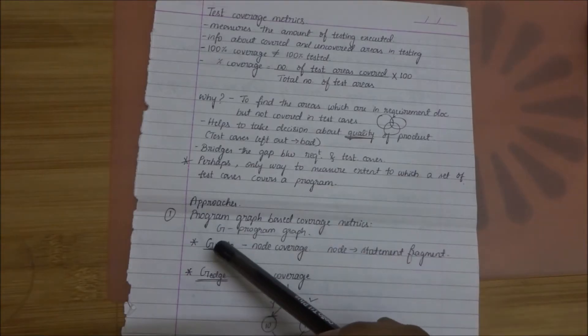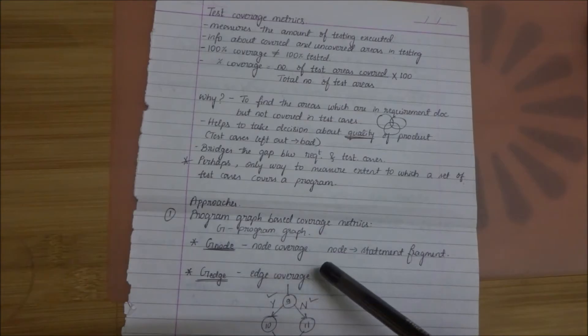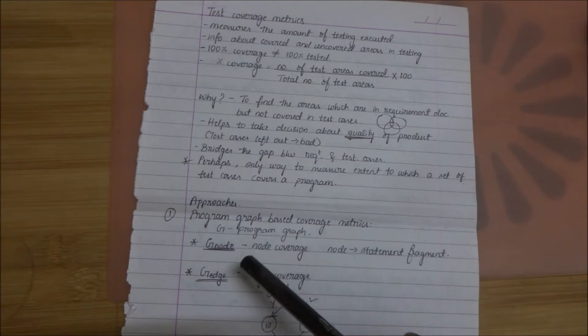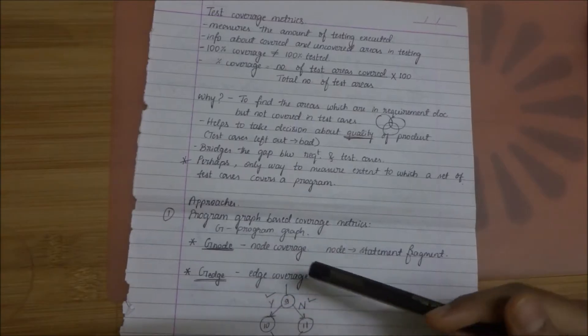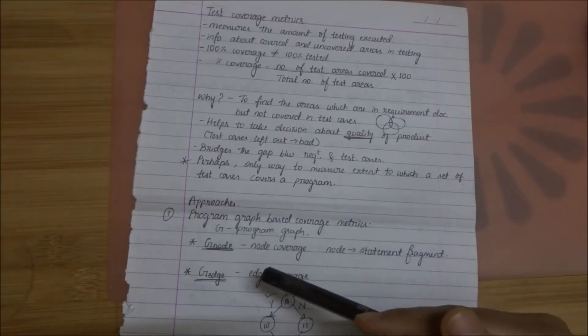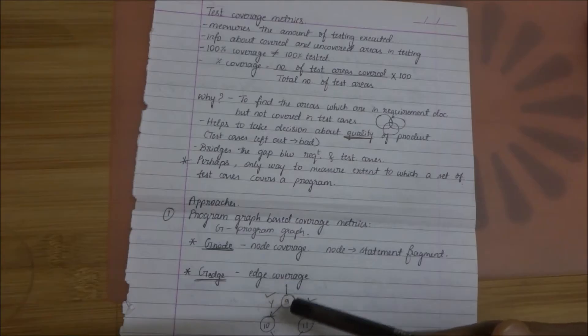There are a lot of approaches in test coverage matrix. I'll be talking about the two main approaches. The first one is program graph based coverage matrix. A program graph is a graphical representation of a program containing the fragment or the statements as nodes.